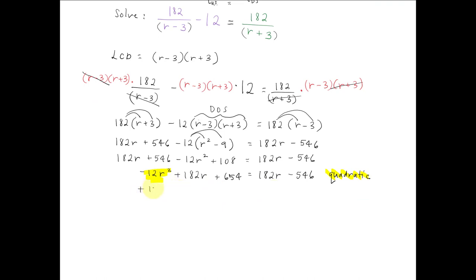So let's move everything to the right side. We'll add 12r squared to each side, subtract 182r from each side, and subtract 654 from each side. And notice that we'll get 0 on the left side equal to positive 12r squared. 182r minus 182r, those ended up canceling. So we're just left with the constant term of minus 546 minus 654, which is minus 1200.